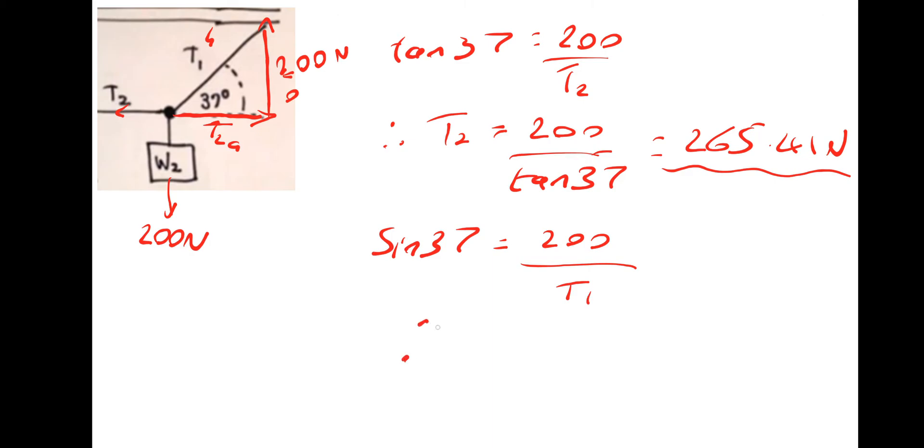Therefore T1 is simply 200 divided by sine 37. So that gives T1 of 332.3 newtons.